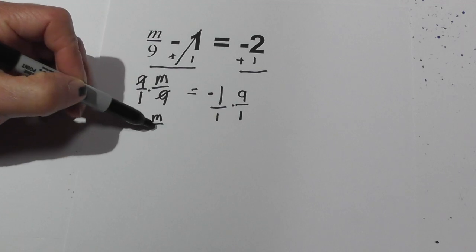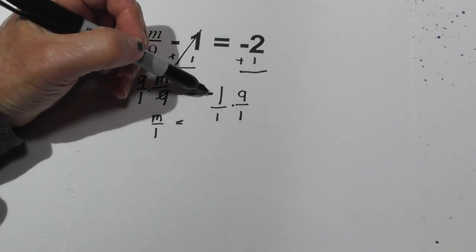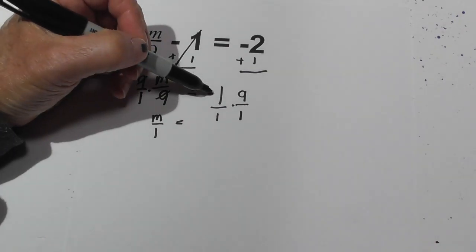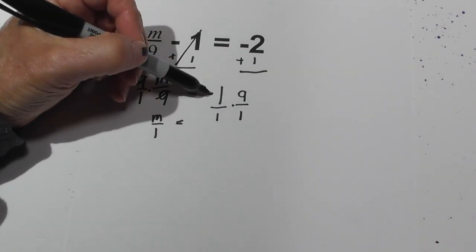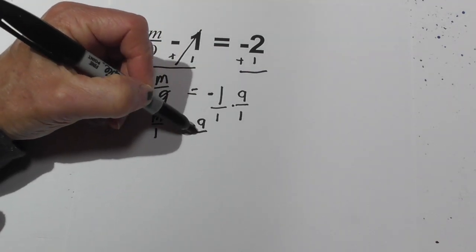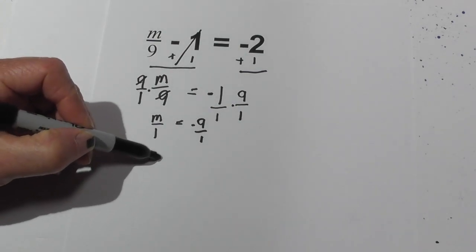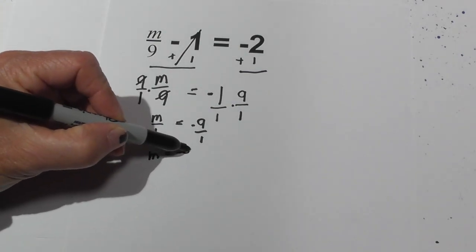You're left with m over 1 equals. Now when you multiply a fraction, you just multiply the numerator and the denominator. So negative 1 times 9 is negative 9 over 1. You can rewrite this as m equals negative 9.